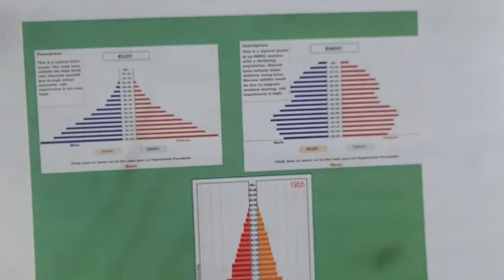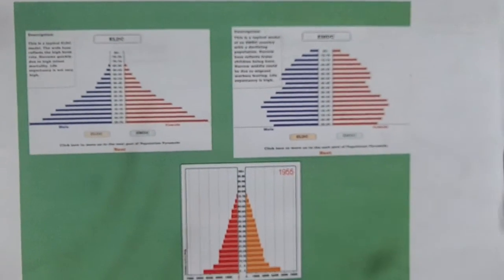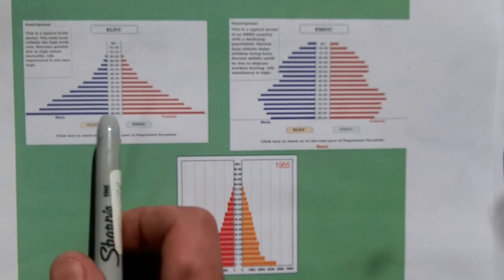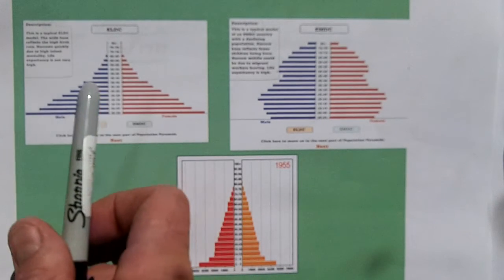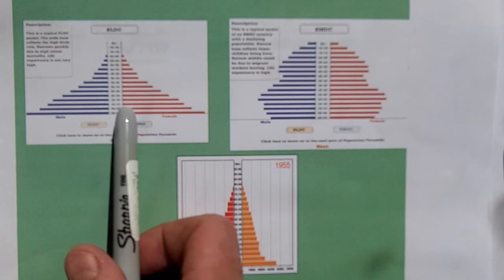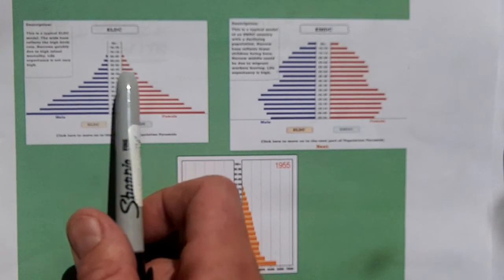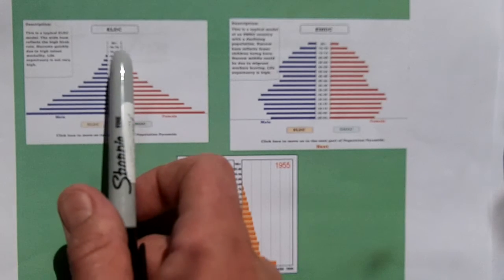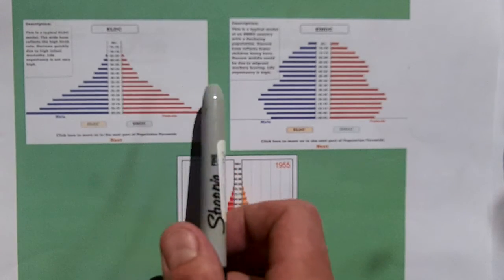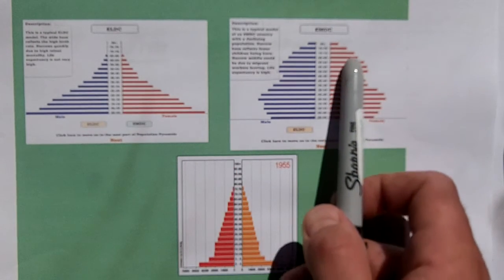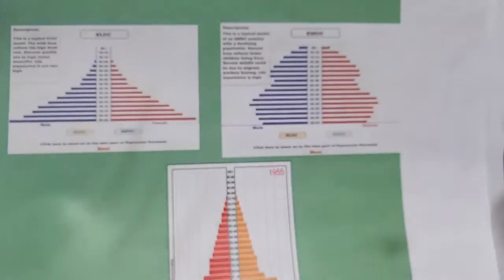You can see in these pyramids a little bit more clearly — you've got the classic poorer country, LEDC, with a wide base and narrow top: lots of children, not surviving very long. And as a country gets richer, people are living a lot longer.